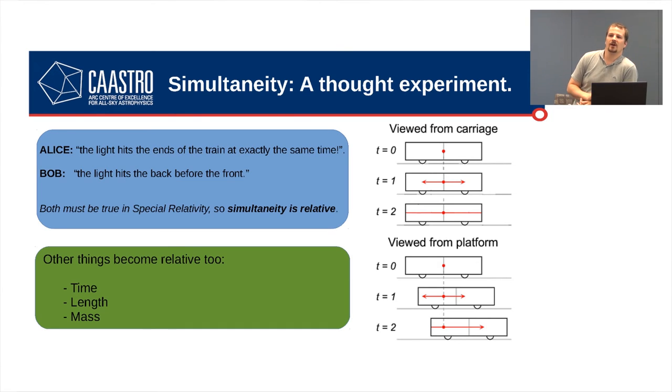But imagine Bob is viewing it from the platform. And what he sees is that Alice is actually travelling fast at some prodigious rate past him on the train tracks. And again, she lets out this flash right in the middle of the train just as she passes Bob. But, of course, to Bob, the distance between the back of the train and the light pulse is decreasing with time because the train is going forward. So, the light pulse, to his perspective, reaches the back of the train before it reaches the front of the train. So, something that happened at the same time in Alice's frame of reference happens at a different time in Bob's frame of reference.